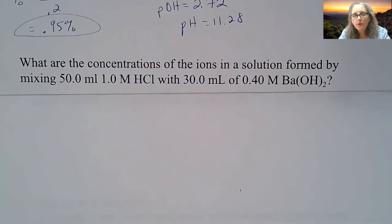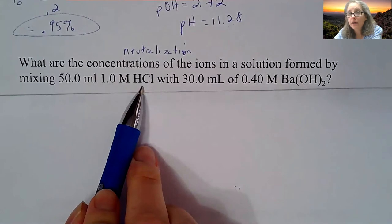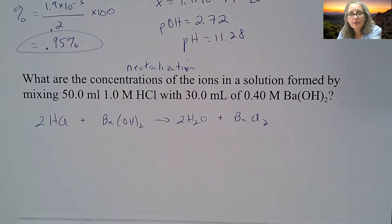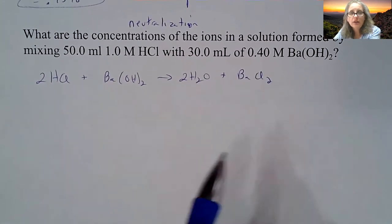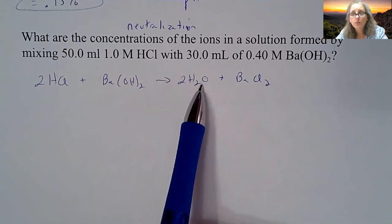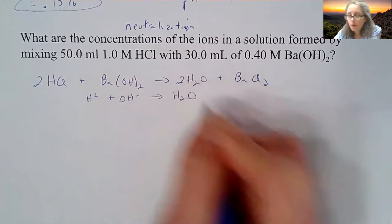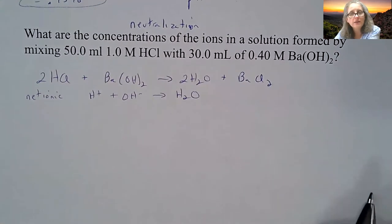The next two problems on the video are an introduction into what we're going to spend a lot more time on in Chapter 17. What are the concentration of the ions in solution formed by the mixing of 50 mLs of a 1 molar hydrochloric acid and 30 mLs of a 0.4 molar barium hydroxide? So this is what we call a neutralization reaction because I have a combination of an acid, HCl, a strong acid, and barium hydroxide, a strong base. For these types of problems, you need to write in a balanced chemical equation because you're going to need it for the stoichiometry. Because I have two OHs, I'm going to need two HCls in order to completely neutralize to make two water molecules. This is what we call the net ionic equation for strong acids and strong base reactions.